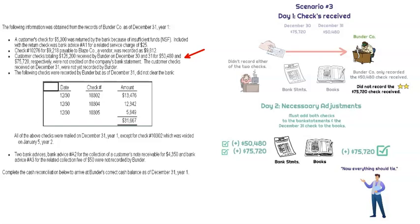So Gerald needs to add the $75,720 back to the books. Wendy needs to add both $50,480 and $75,720 back to the bank statements so they show up correctly. The name of the game is tying all of this out — when audited, we need to show that the amounts on the bank statements match what's presented in the financial statements. Only the $75,720 needs to be added back to the books; both amounts need to be added back to the bank statements.